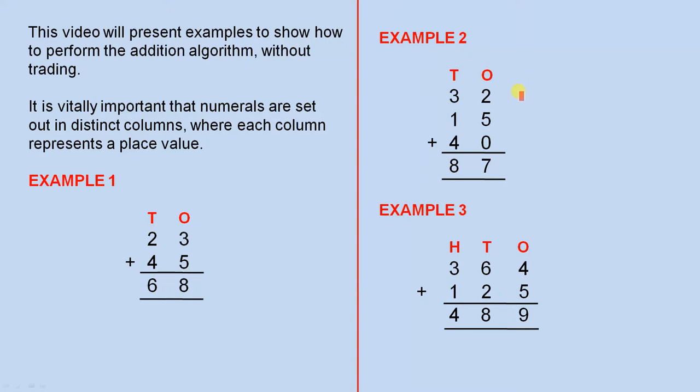Example two. Add the numbers in the ones column to give you 7. When you add the numbers in the tens column it gives you 8. The answer is 87.